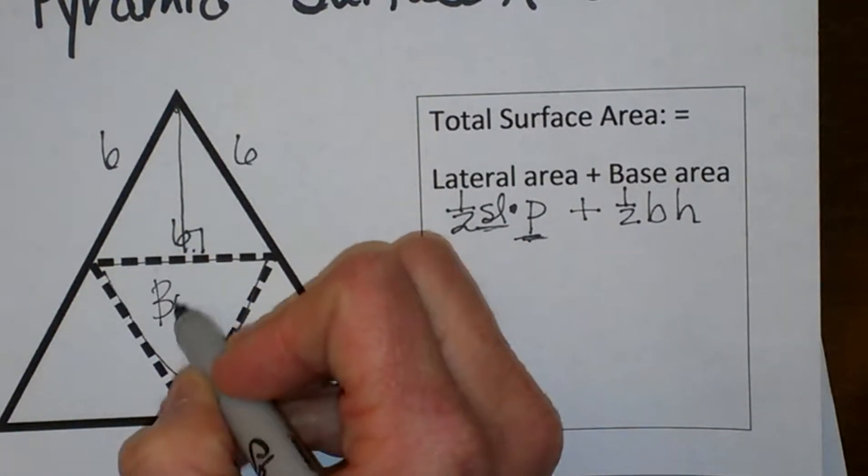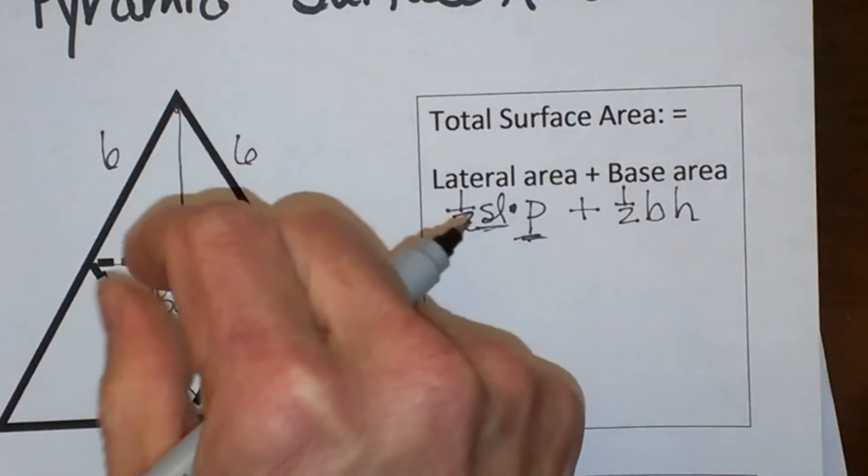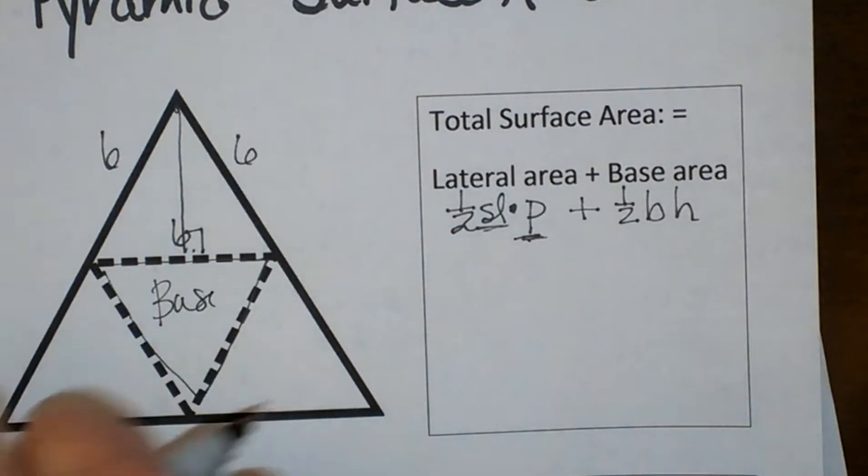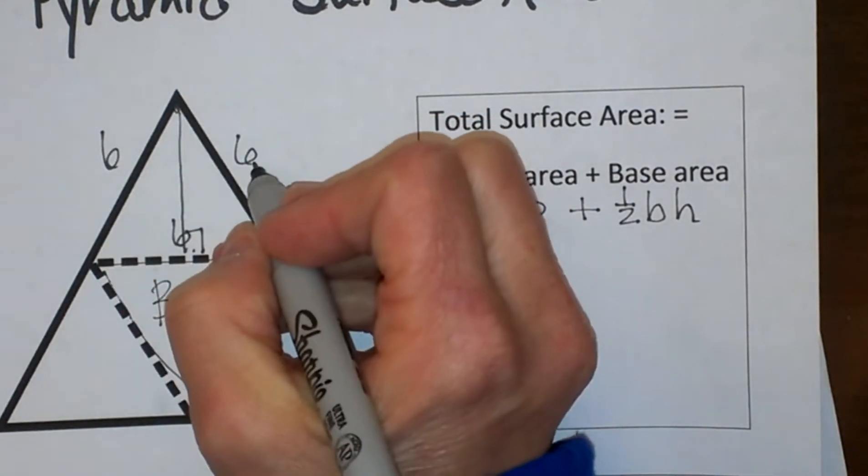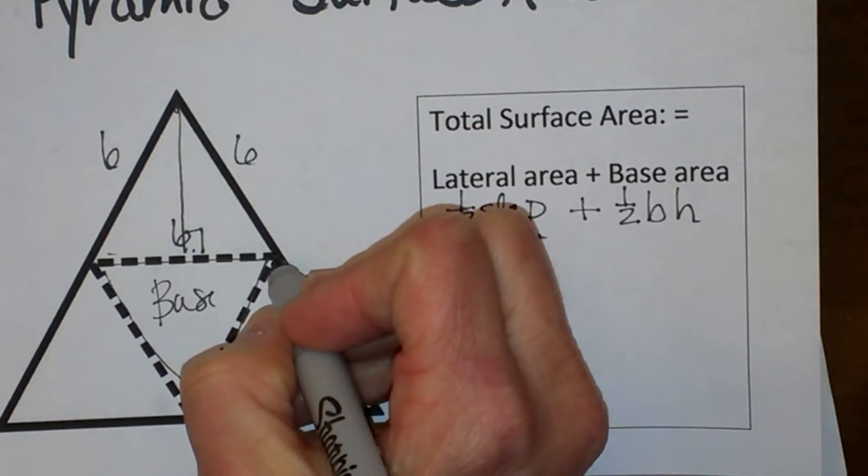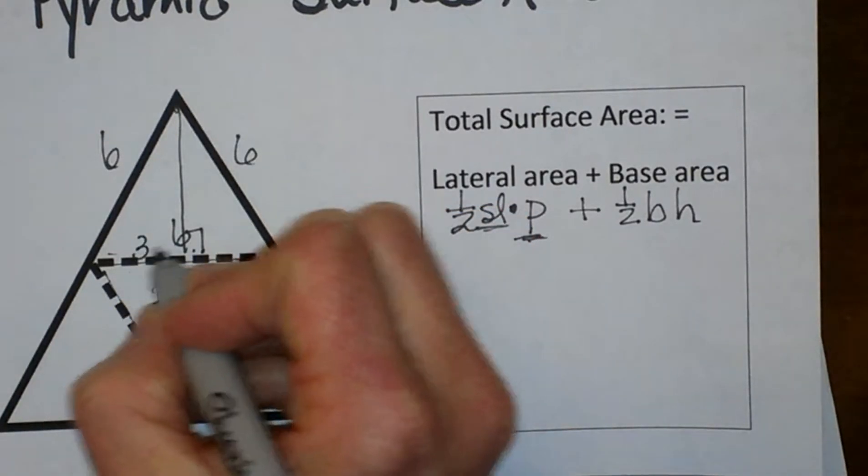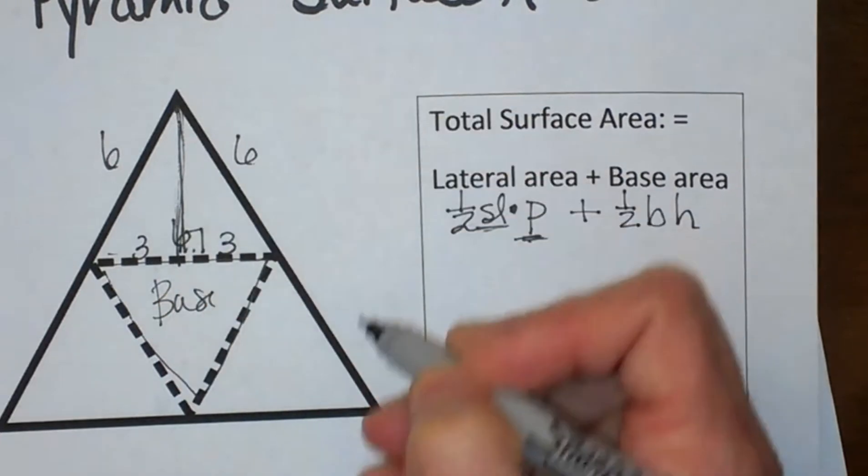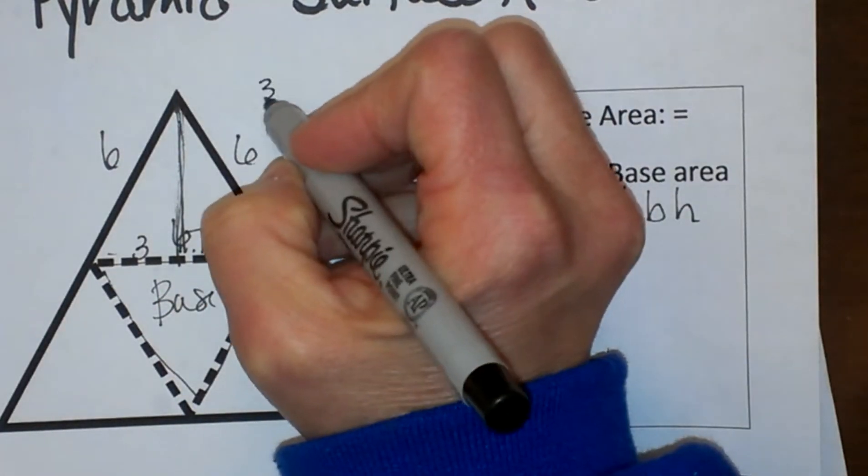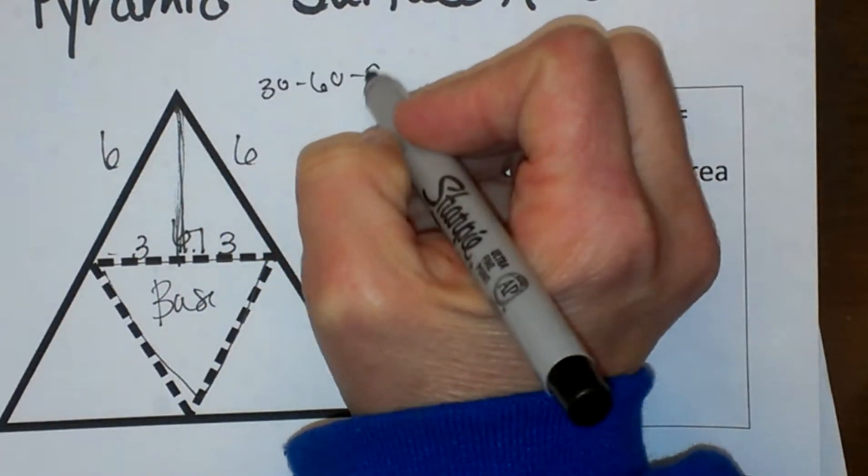This is my base because I would fold it up and all these three sides would connect up here at the top. Okay so if this side is 6, this side is 6 and my base is 6, I am dealing with an equilateral side so it cuts it into a 3 and a 3 and then I can find this height or the slant height by using my 30-60-90 rules.